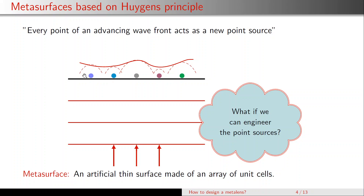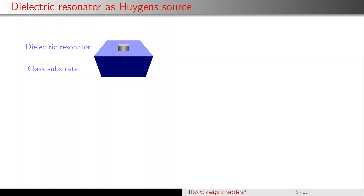This is the working principle behind a meta surface. We can create the relative phase such that a plane wave is converted into a cylindrical wavefront, which converges at the focal point making a bright spot — effectively a lens. The question is: how do we create these real point sources and what conditions do they have to satisfy?